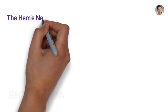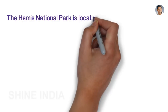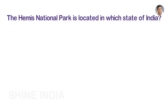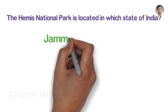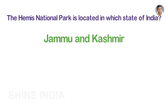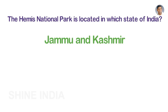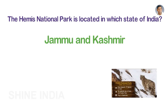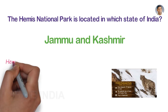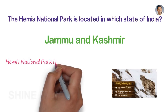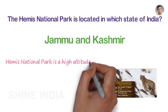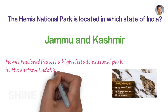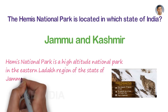The Hemis National Park is located in Jammu and Kashmir. It is a high-altitude national park in the eastern Ladakh region of the state of Jammu and Kashmir, India.